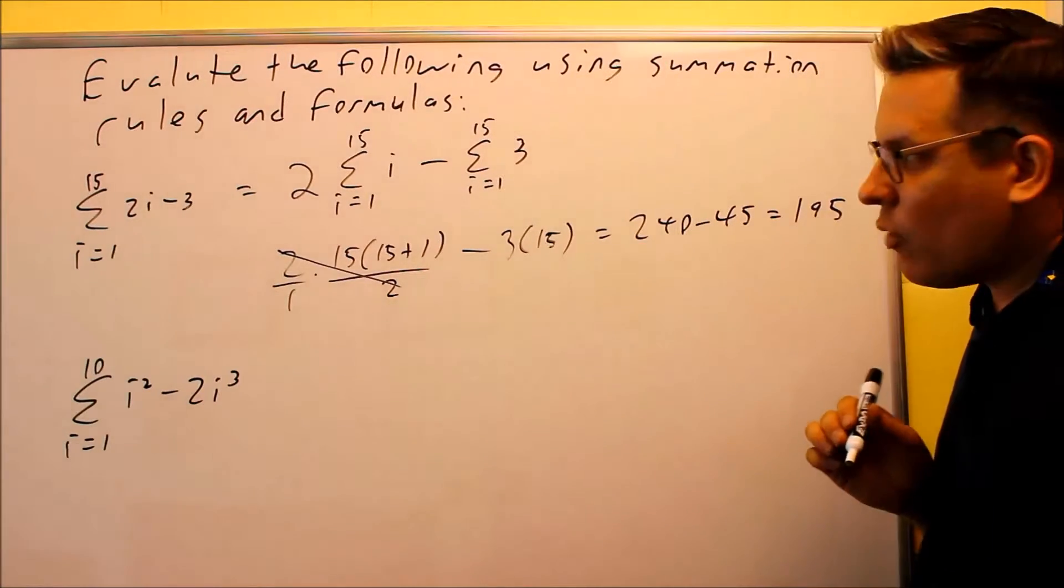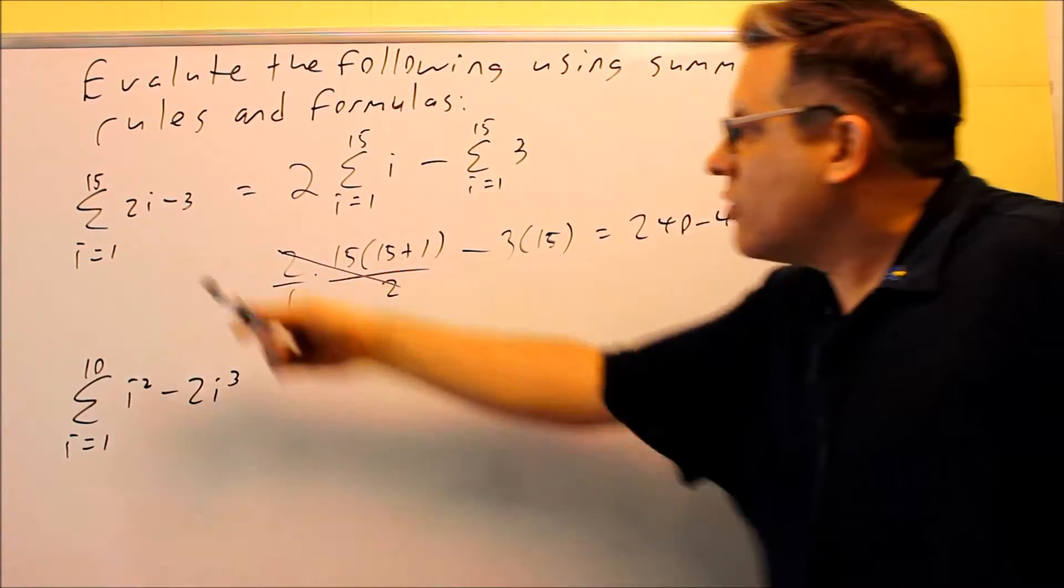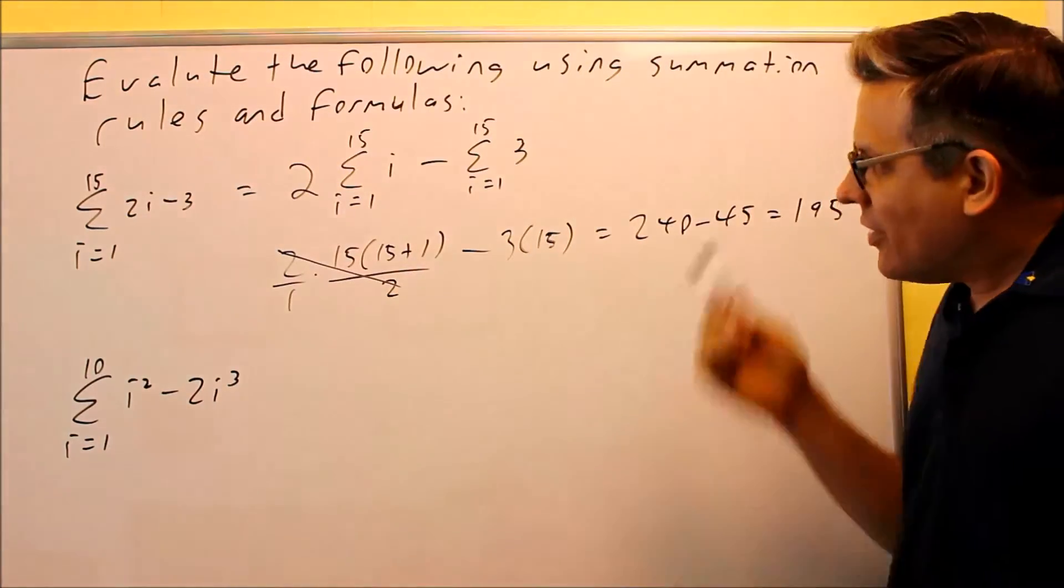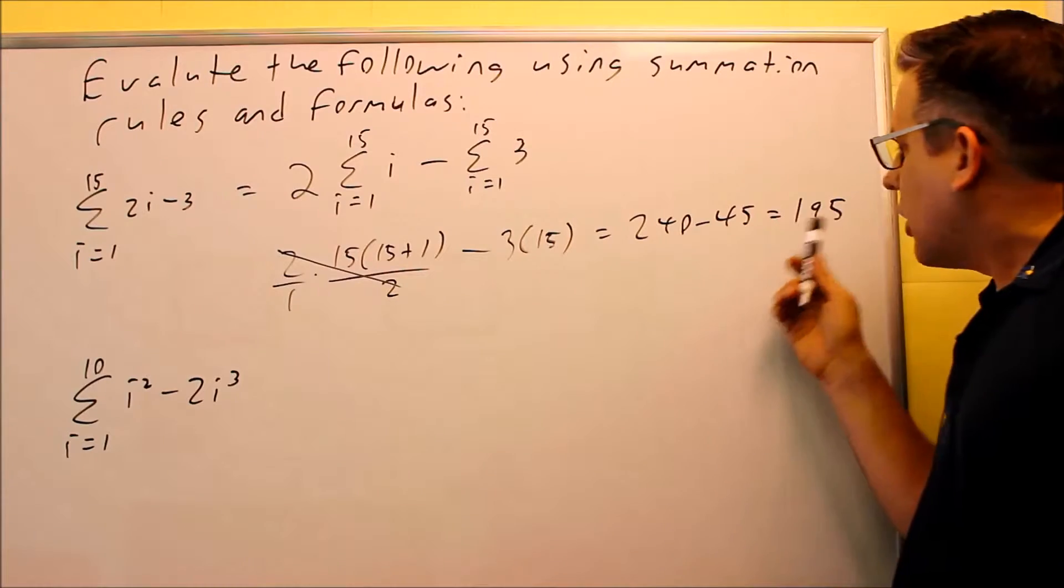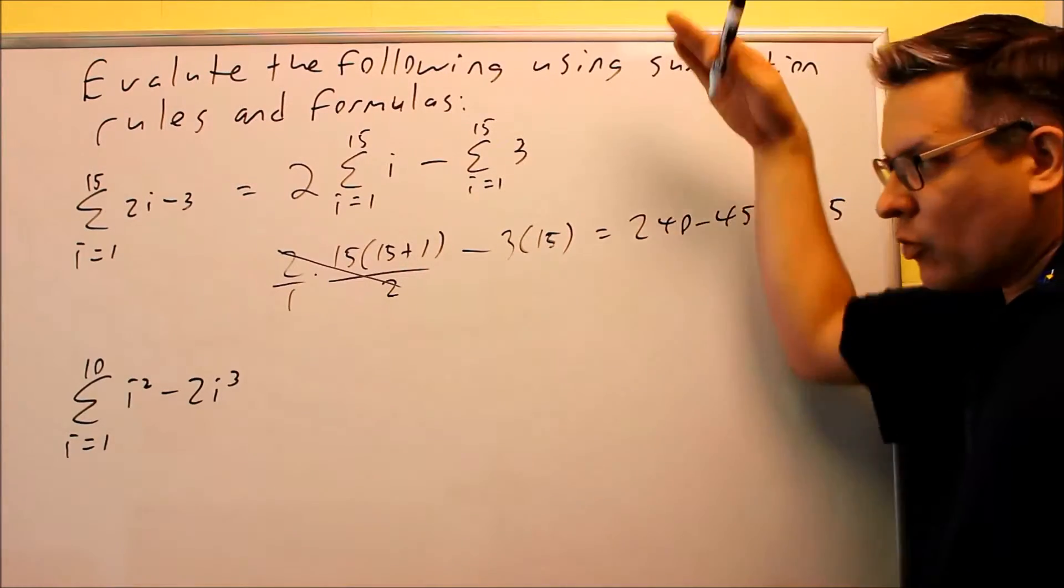The other way of doing it is I had to put 1 in for i and then 2 and then 3 and do all that 15 times, add all that together. This way, by using formulas, I was able to get the answer in just a couple steps, and that way I don't have to write all that out.